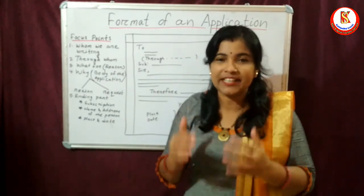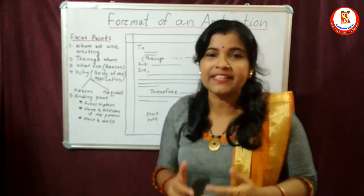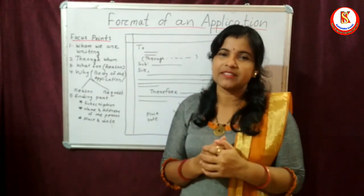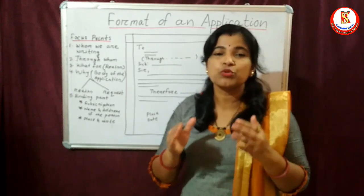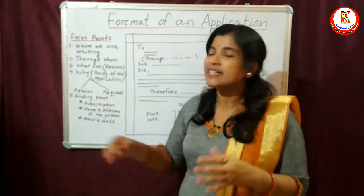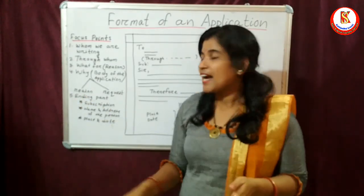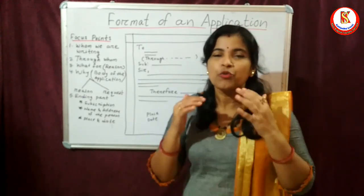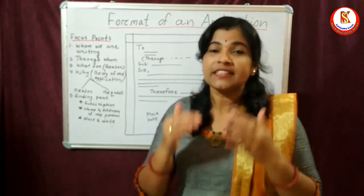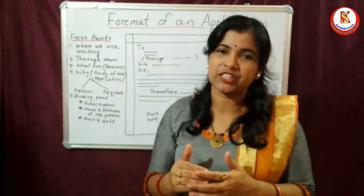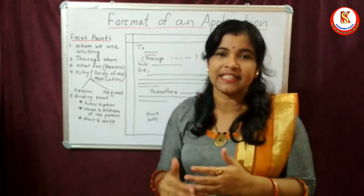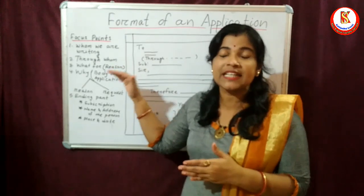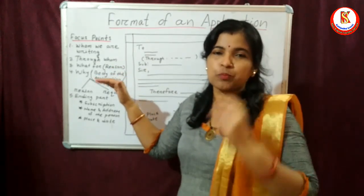This content is generally divided into two parts. The first part is reason, and the second part is request. In the first paragraph, we write the reason for writing the application. In the second paragraph, we make the request to the person concerned. So the content of an application has two parts.